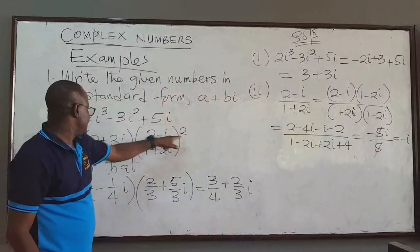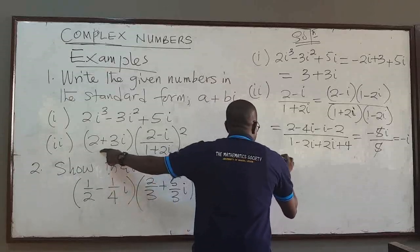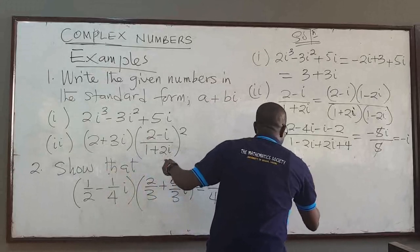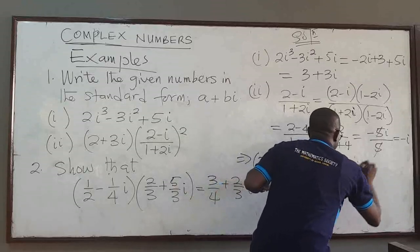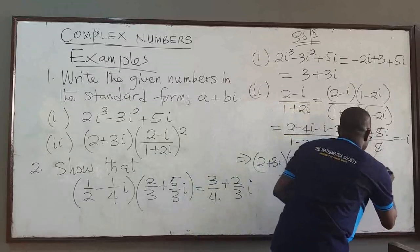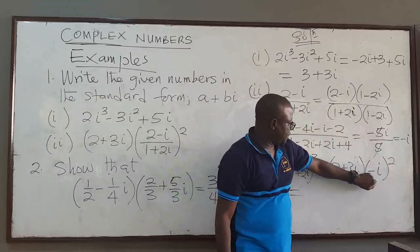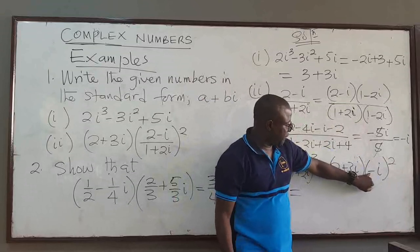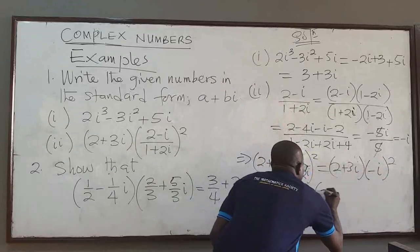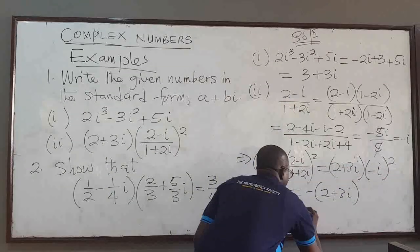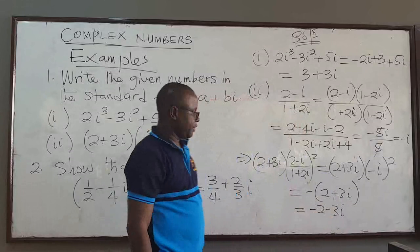So you will square that, then multiply. This implies that (2 plus 3i) multiplied by [(2 minus i)/(1 plus 2i)]² equals (2 plus 3i) multiplied by (negative i)², which I need to square. Now negative i squared: negative 1 squared is positive, but i squared is negative, so this gives us negative 1. So this is just minus(2 plus 3i), which is negative 2 minus 3i. So in standard form, the real part is negative 2 and the imaginary part is negative 3.